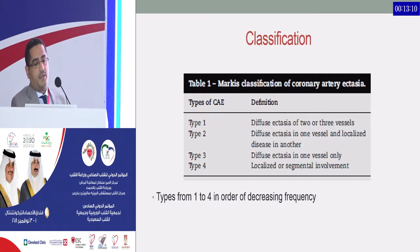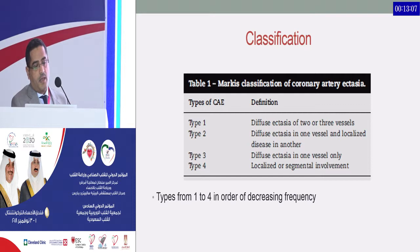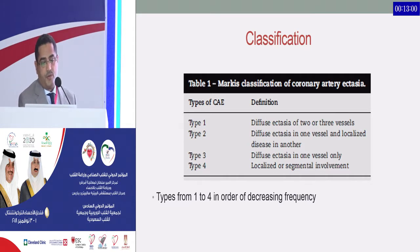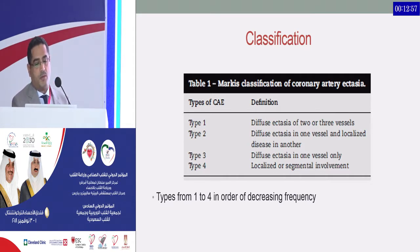The Markis classification for coronary artery ectasia: Type 1 is diffuse ectasia in two or more vessels; Type 2 is diffuse ectasia in one and localized in other vessels; Type 3 is diffuse ectasia in one vessel only; Type 4 is localized or segmental involvement.